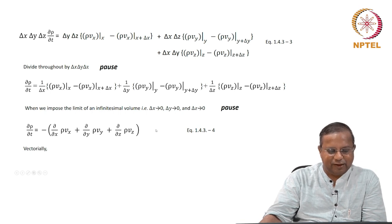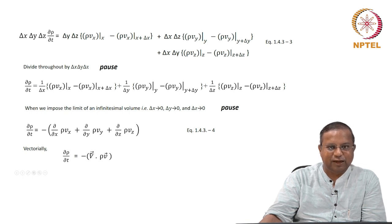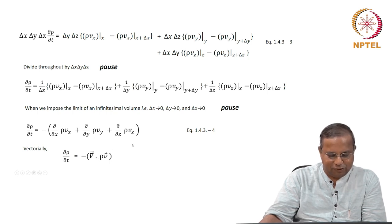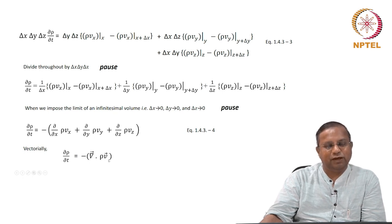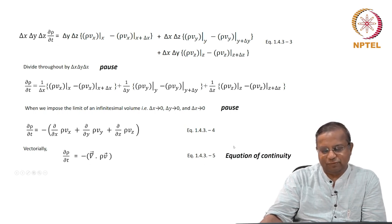Vectorially speaking, you could write this as: ∂rho/∂t equals minus del dot (rho·v), where del is the operator ∂/∂x·i + ∂/∂y·j + ∂/∂z·k, and rho·v is the vector with components rho·vx, rho·vy, rho·vz. Taking the dot product of del with rho·v gives this nice compact expression. This is the equation of continuity: ∂rho/∂t = −∇·(rho·v). We will call this equation 1.4.3-5.